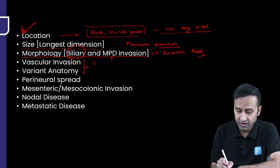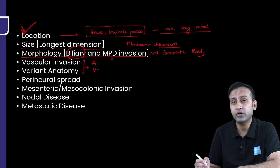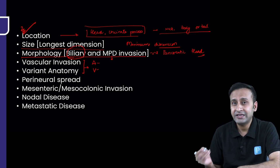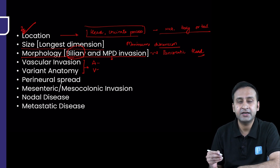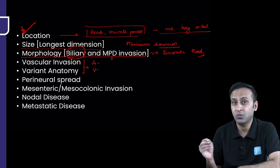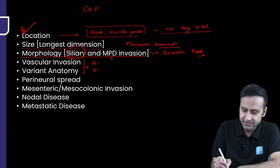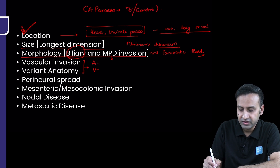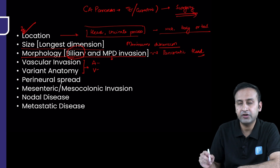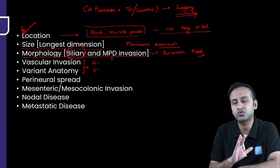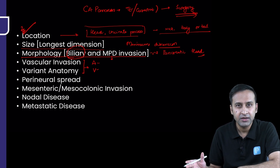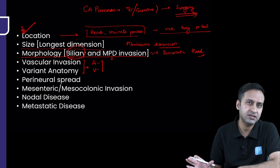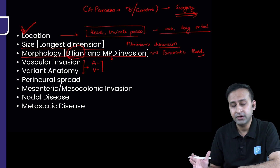Fourth: vascular invasion and variant anatomy — what vessels to look for, which important arteries and veins to keep in mind while reporting. This makes a lot of difference in the eventual outcome. If you over-stage a case and write that a vessel is involved to the extent making it unresectable, you are denying life to the patient — because in CA pancreas, the curative treatment is only surgery. The role of the radiologist is paramount. Calling a disease unresectable is like a death sentence for the patient.